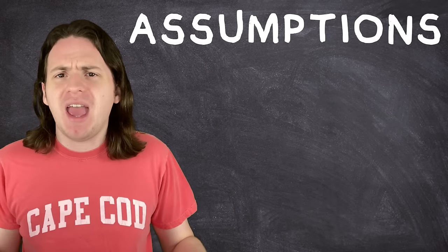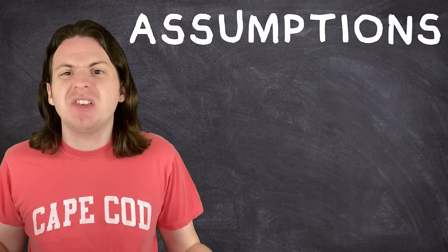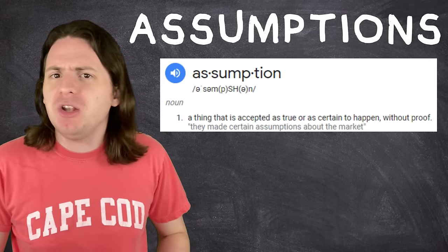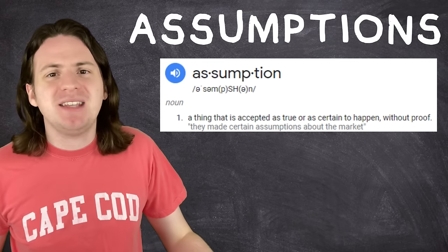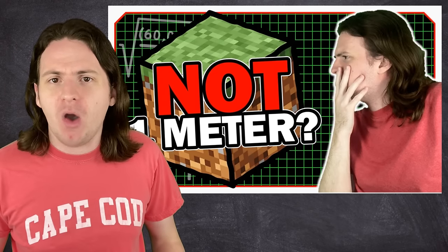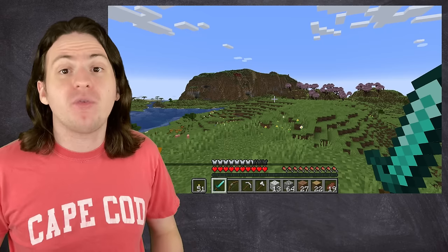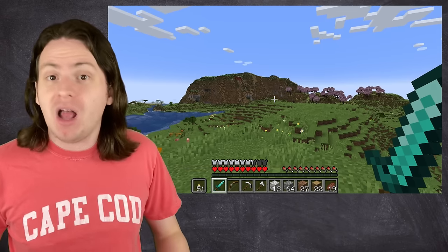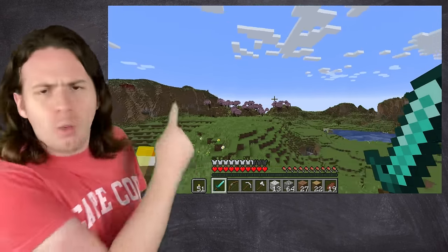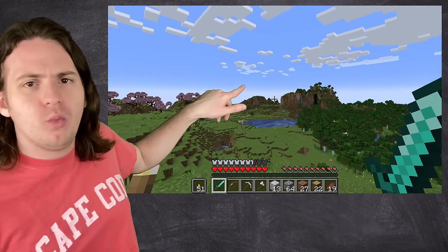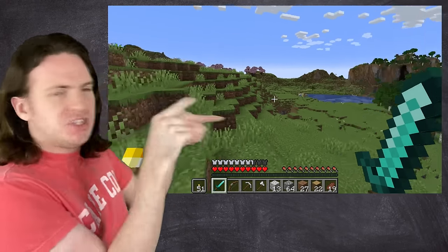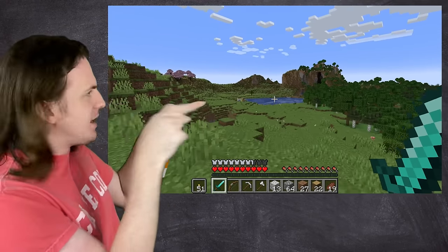Now, in everyday conversation, an assumption is basically like a guess. You don't have all the information, but you're just gonna take a stab and say that something is probably true. So in my last Minecraft video, when I said I was assuming that the Minecraft world was spherical, a lot of you were rightfully like, why though? Why would you do that? Because you can just use your eyeballs and you could see that that's not true. That's wrong.